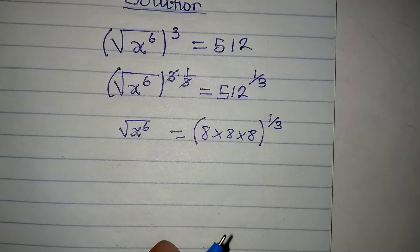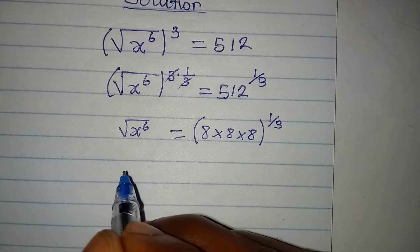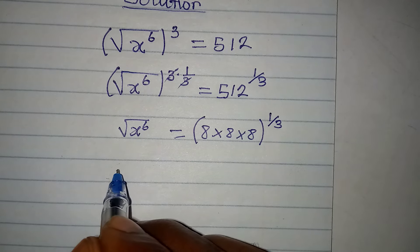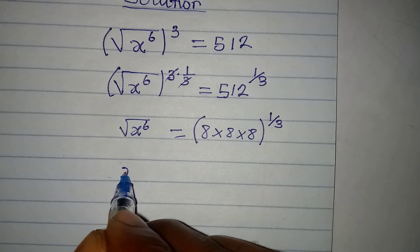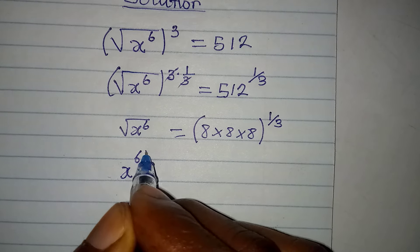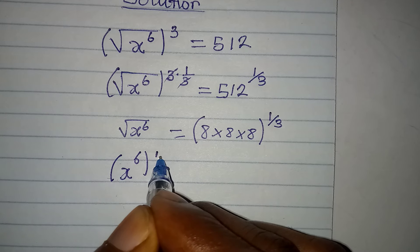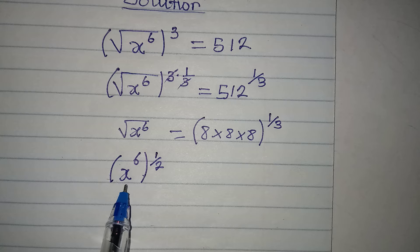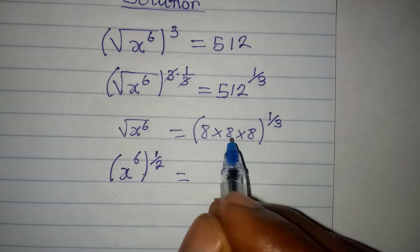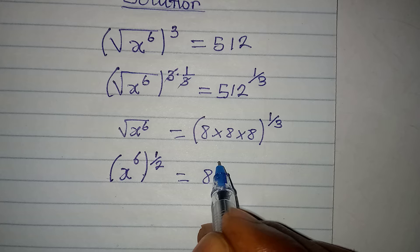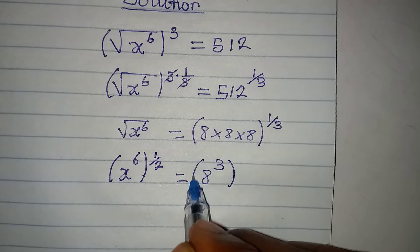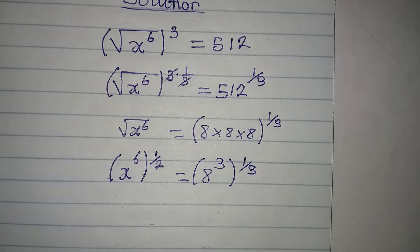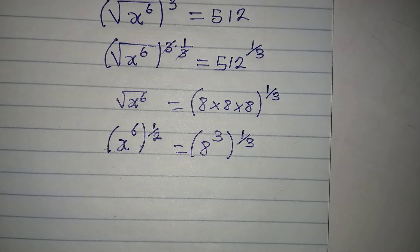I can remove the square root notation: the square root of x to the power of 6 is the same as x to the power of 6 to the power of 1 over 2. On the right-hand side, 8 appearing in 3 places gives us 8 to the power of 3, with the power of 1 over 3 on the outside.